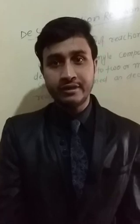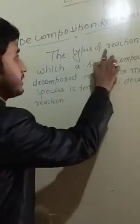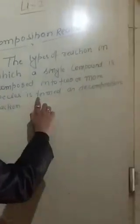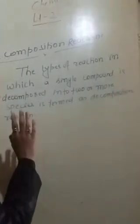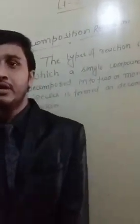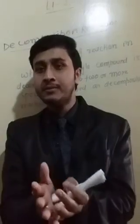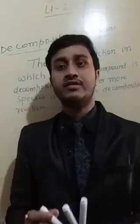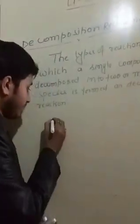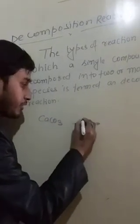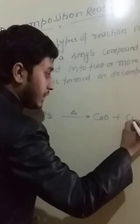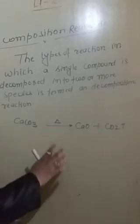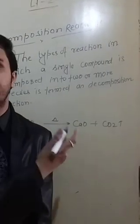Coming to the definition: the types of reaction in which a single compound is decomposed into two or more species is termed as a decomposition reaction. There is no reaction in which a single compound will break into two or more substances. You call it a decomposition reaction. For example, CaCO3 upon heating gives CaO and CO2. This single compound gives more than one molecule, so it is called a decomposition reaction.